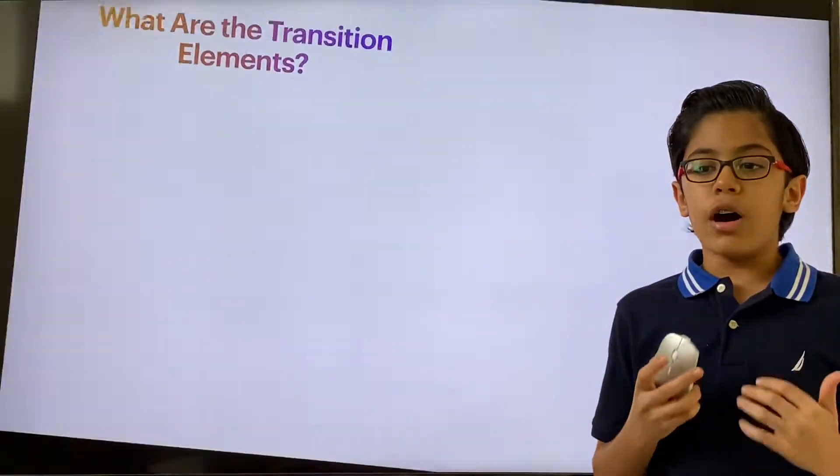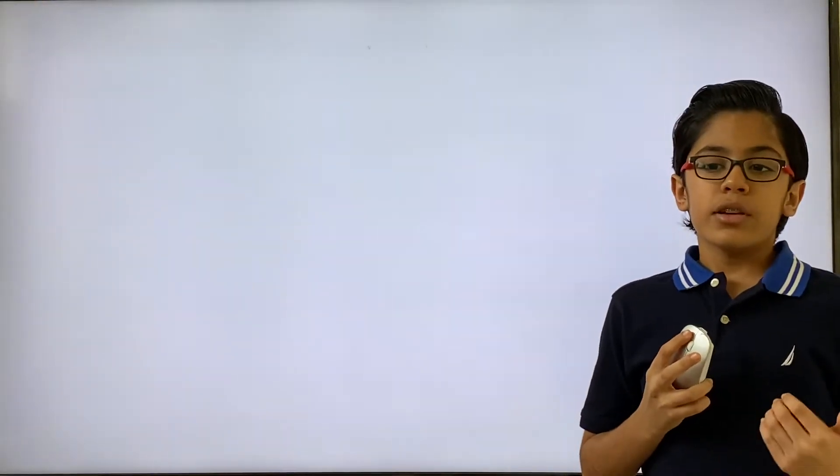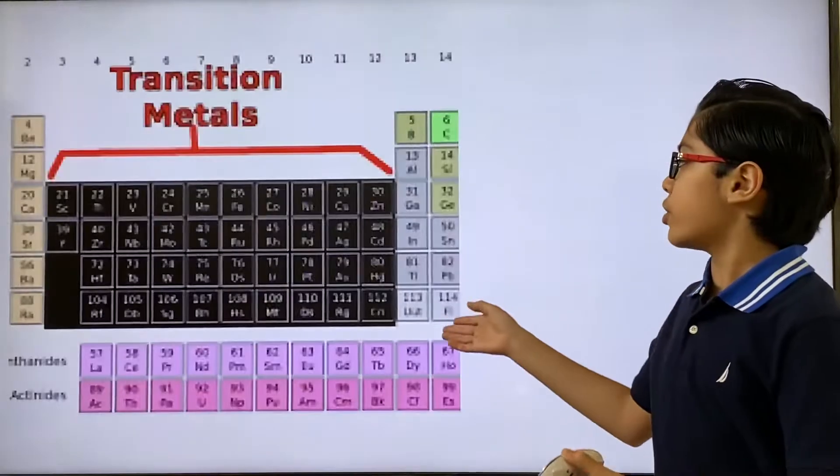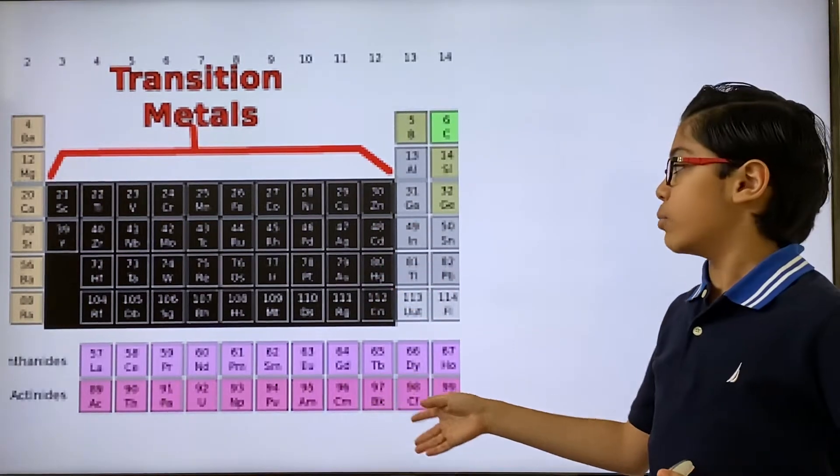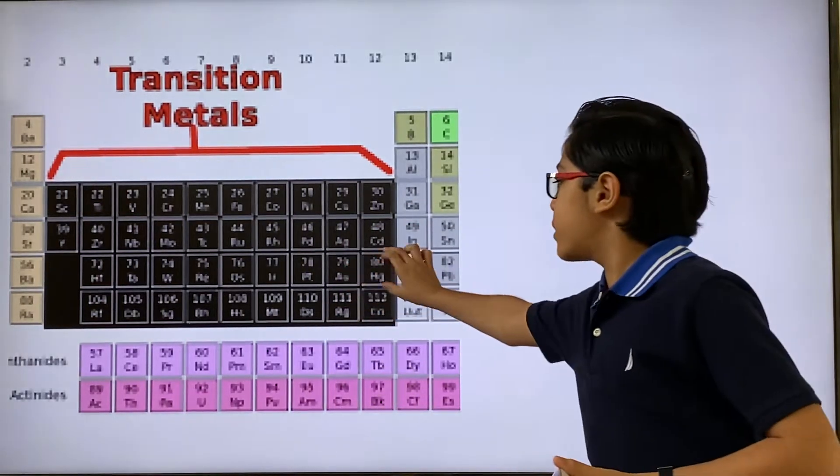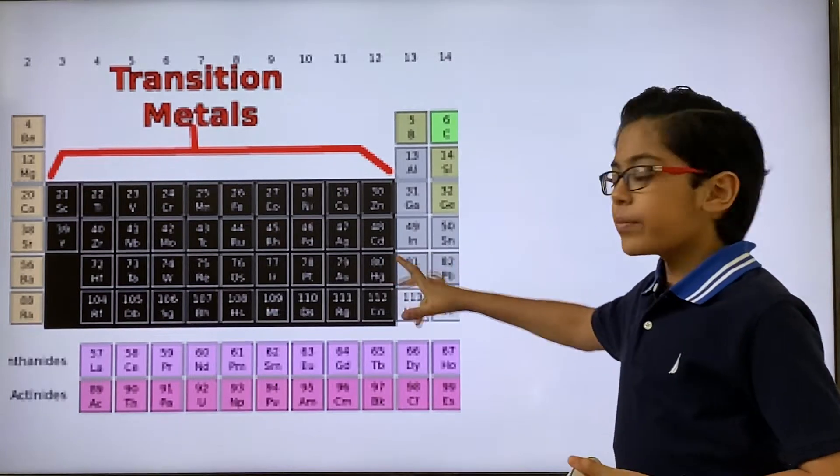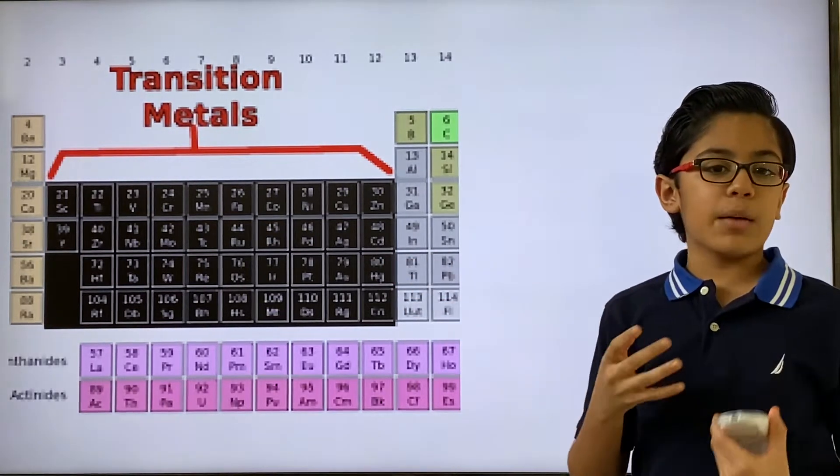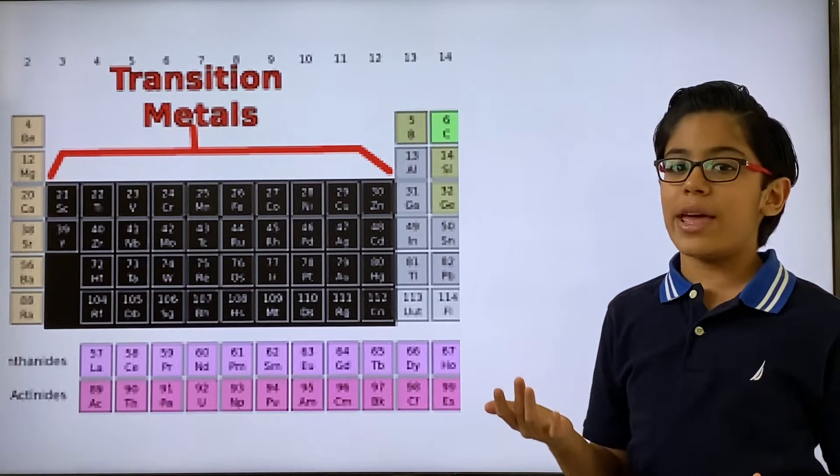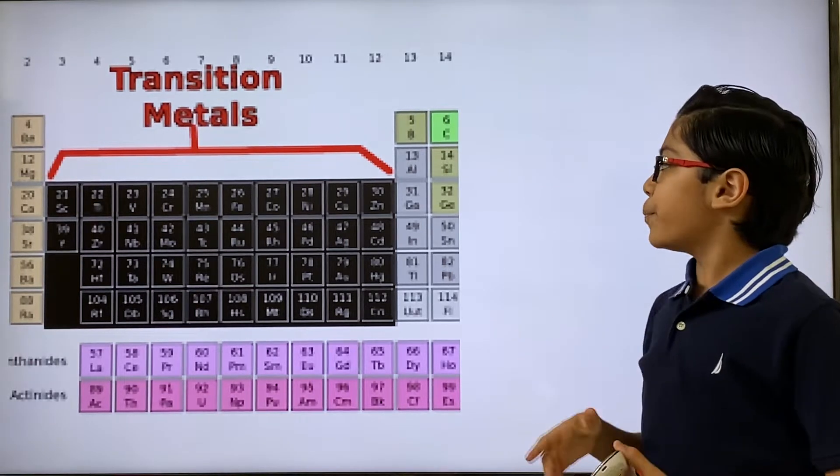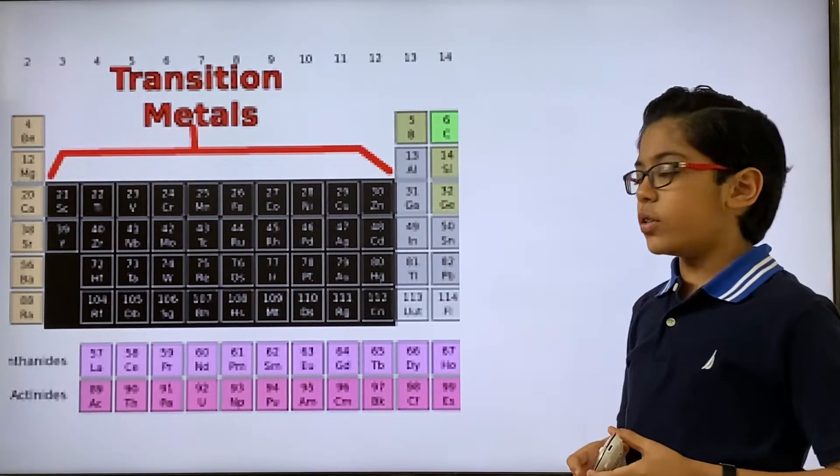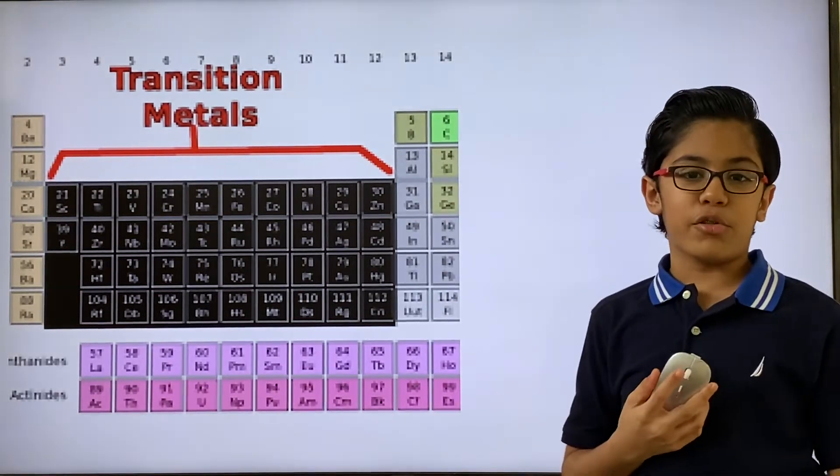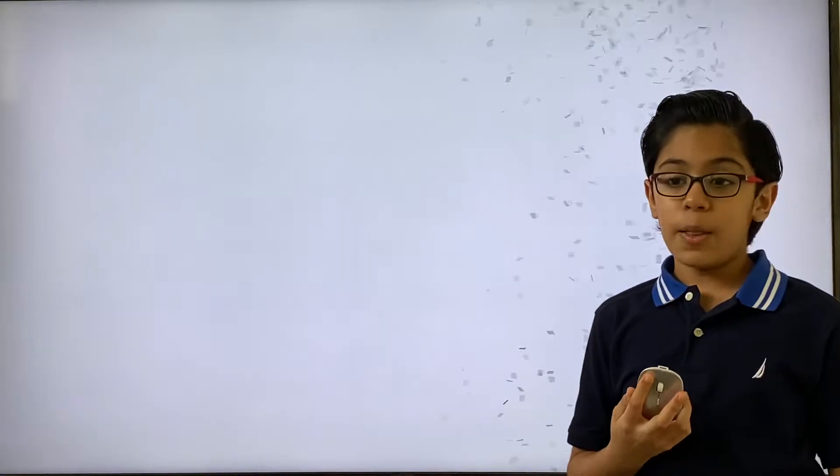Now, to start off, what are the transition elements? You can see in this picture, the transition elements is a very large group of the periodic table. In today's video, I'm going to be discussing these two rows. Because the periodic table transition element group is so big, you can't describe it all in one video.